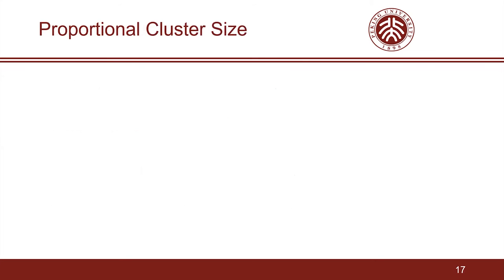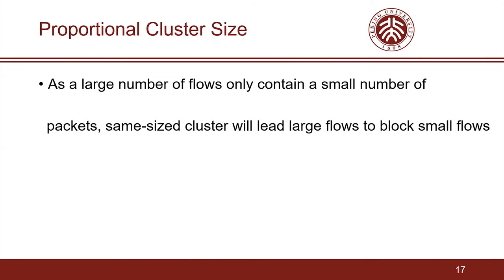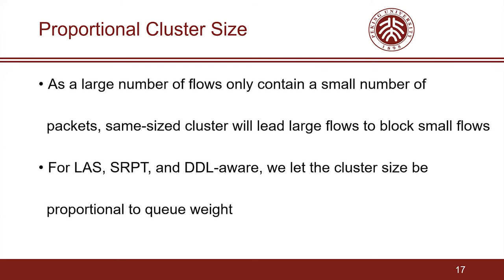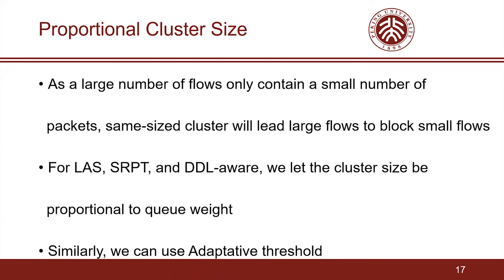For LAS, SRPT, and deadline-aware scheduling, packets in the queue with the highest priority will dequeue first. As a large number of flows only contain a small number of packets, same-size clusters will lead large flows to block small flows in the queue with the highest priority. To address this issue, we let the cluster size be proportional to queue weight. Similarly, we can also use the adaptive threshold proposed above with only minor modifications.